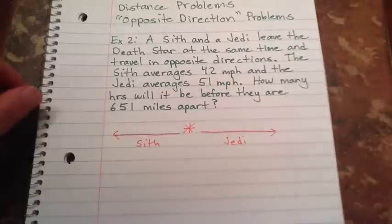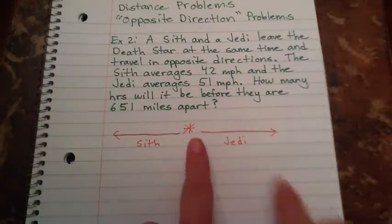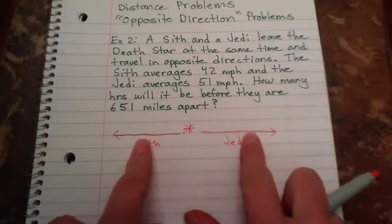And let's say this is the Sith and this is the Jedi. And I'm going to make that not look like a multiplication sign. There. So here's the Death Star. They leave at the same time. They start heading in opposite directions.